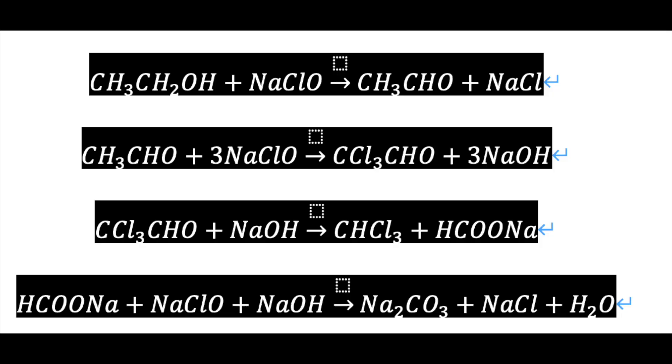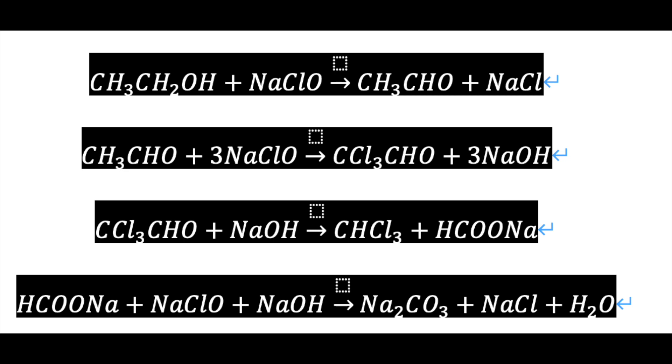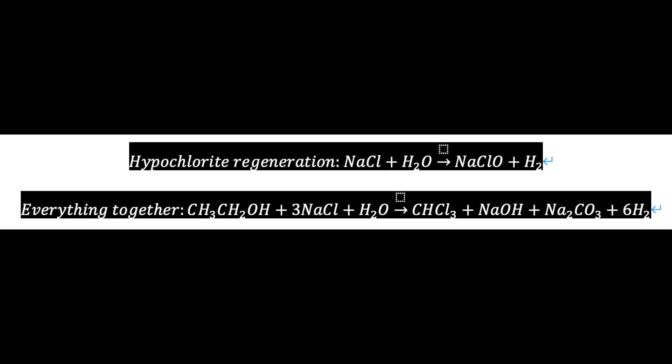Notice that in this reaction, the ethanol is first oxidized to ethanol by a hypochlorite, and then the byproduct is sodium chloride, which can be electrolyzed in the cell again to form more sodium hypochlorite. So in theory, if we run the cell long enough, all of the chlorine atoms in the sodium chloride will be eventually converted to the chloroform, while leaving a solution of sodium hydroxide, sodium formate, sodium carbonate, and various other reaction products.